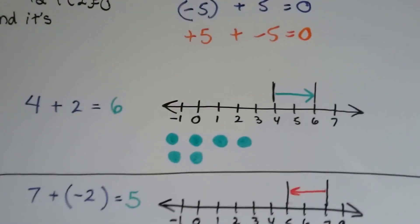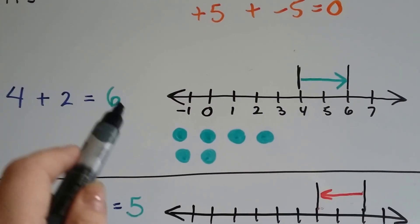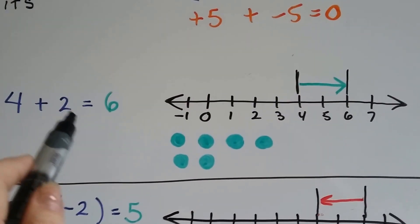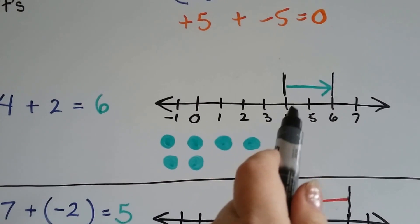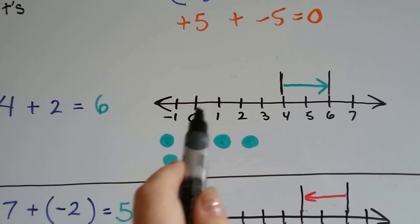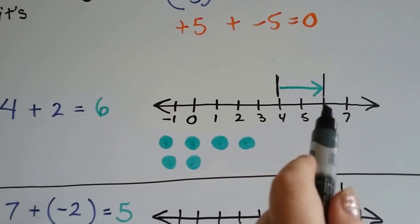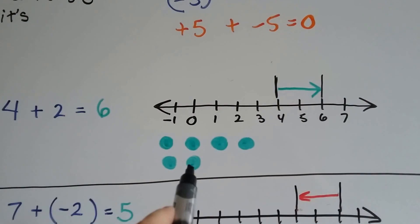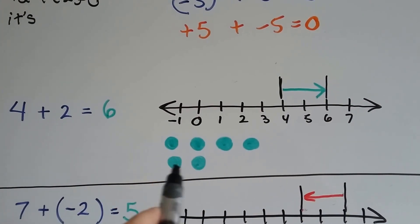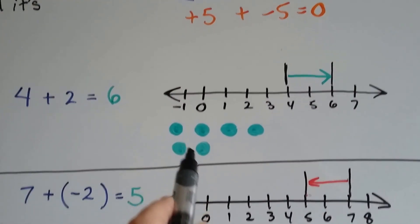This is like kindergarten or first grade math: 4 plus 2 equals 6. A positive 4 plus a positive 2 is going to be a positive 6. We're at positive 4 on the number line — on this side of zero — we add 2 and it gets us to 6. We've got 4 positive chips, we add 2 more positive chips, and we get 6 positive chips.